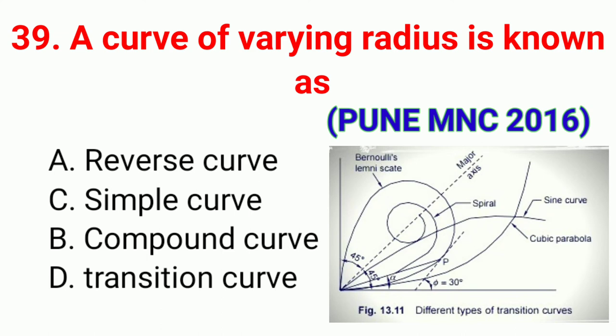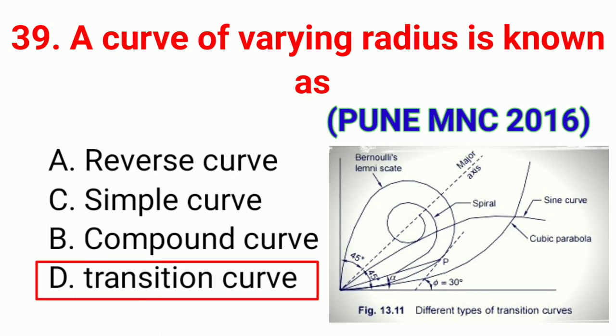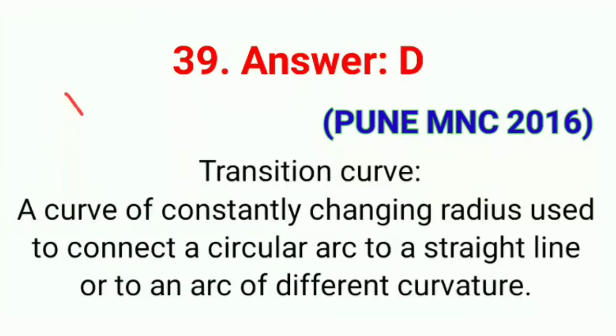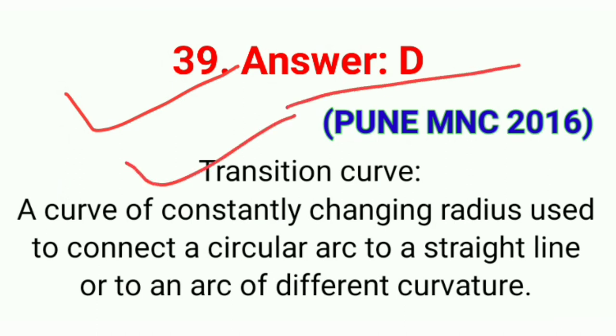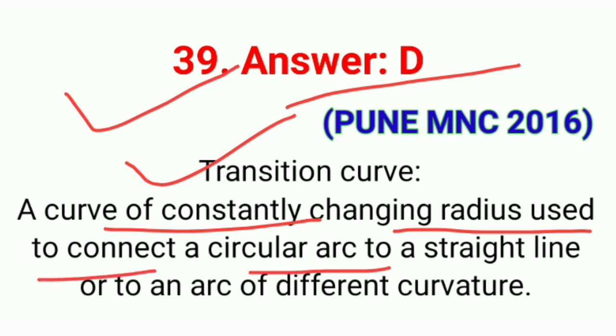Question number thirty-nine: A curve of varying radius is known as. The correct answer is option D, transition curve. A transition curve is a curve of constantly changing radius used to connect a circular arc to a straight line or to an arc of different curvature.